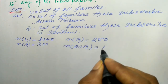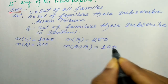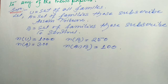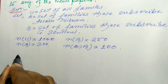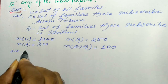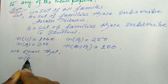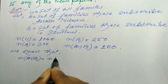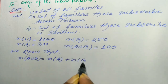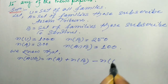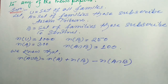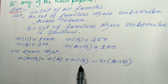First we find n(A ∪ B). We know that n(A ∪ B) = n(A) + n(B) − n(A ∩ B). So using this formula, n(A ∪ B) = n(A) + n(B) − n(A ∩ B).